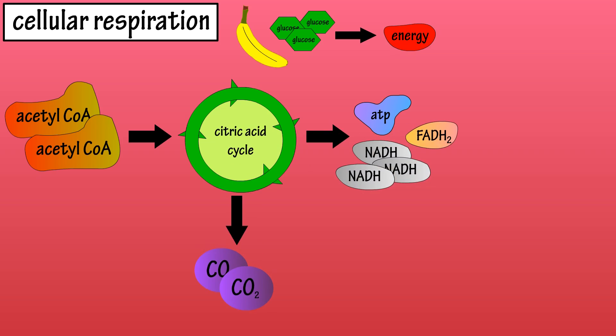But remember, we started with two acetyl-CoA molecules, so the citric acid cycle must occur twice, which gives a total of two ATPs, six NADHs, two FADH2s, and a total of four carbon dioxide molecules are released.